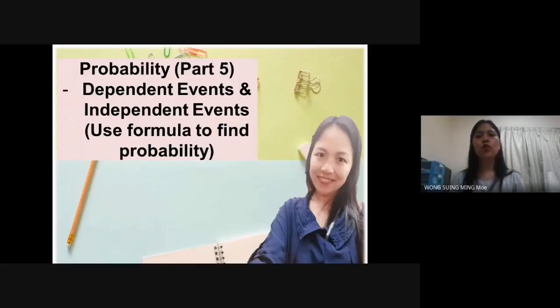In the previous video, probability part 3, I discussed already what is dependent events and independent events and we find the probability by using listing method. Whereas in video 4, we learned how to verify the context about the formula of probability. In this video, I will discuss how to find the probability of dependent events and independent events by using formula.